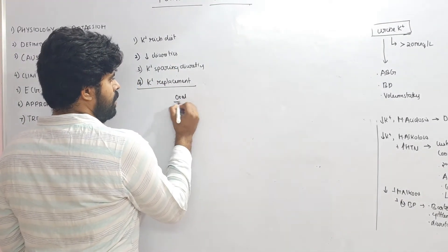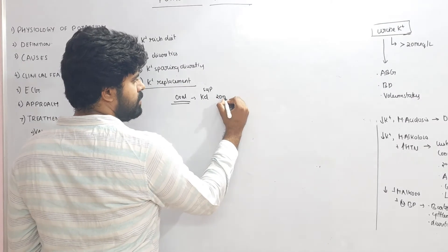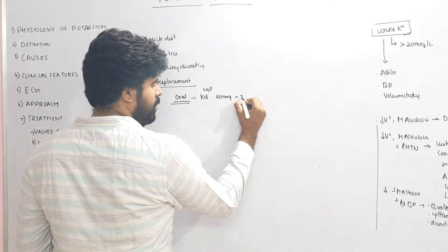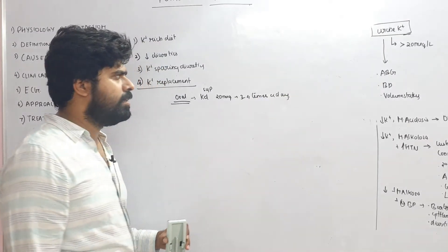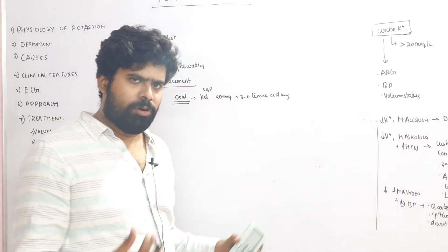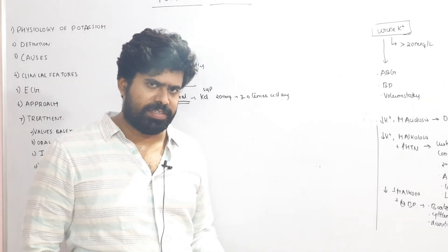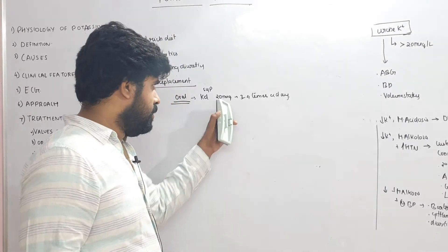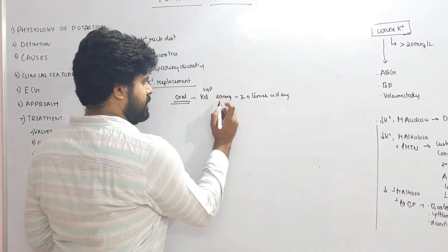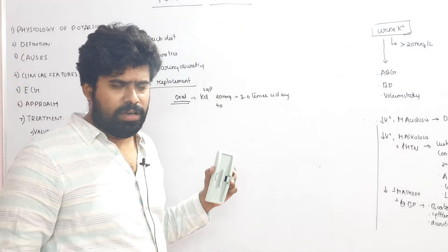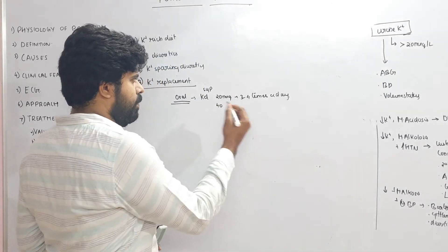For potassium replacement, there are two methods. Oral replacement: syrup KCl can be given 20 milliequivalents three to four times a day, mixed with water and taken after food, as it can cause gastritis and esophageal erosions. For mild hypokalemia, 20 mEq dose is used; for severe hypokalemia, the dose can be raised to 40 milliequivalents. Very severe hypokalemia requires parenteral correction rather than oral.